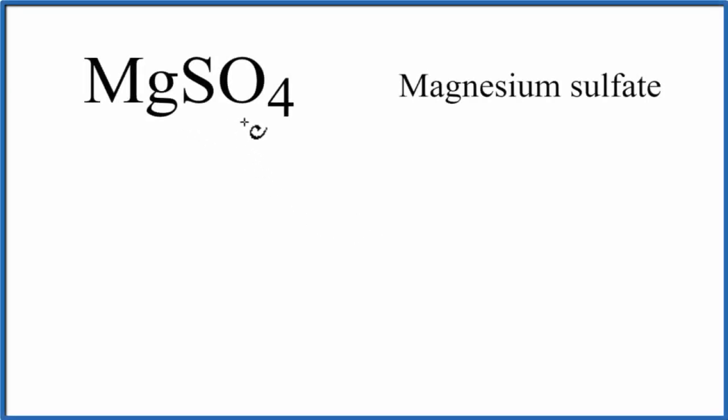To write the Lewis structure for MgSO4, magnesium sulfate, we first need to recognize that magnesium is a metal, and S and O are non-metals.